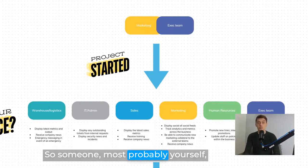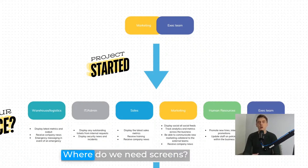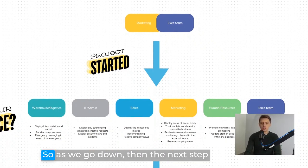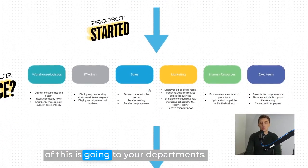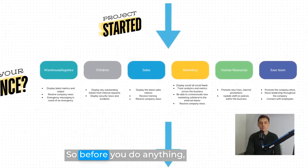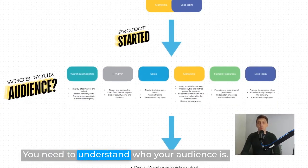This tends to start from either the marketing or the exec team — it can sometimes come from an IT team perspective, but this is typically what we see. So that's where the project starts. Someone, most probably yourself, will be tasked to go and find out what content do we need, where do we need screens, who are we influencing and how are we influencing them. The next step is going to your departments.